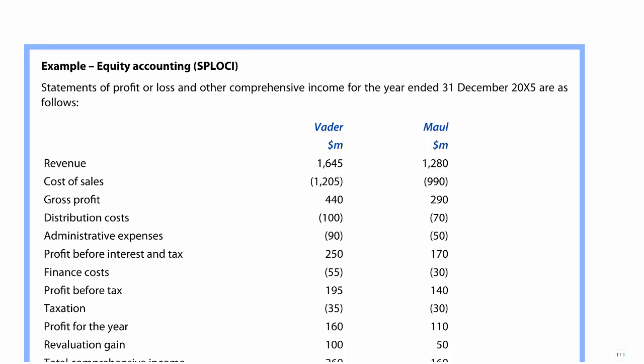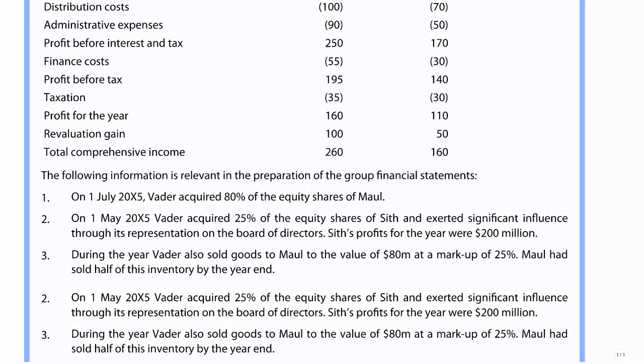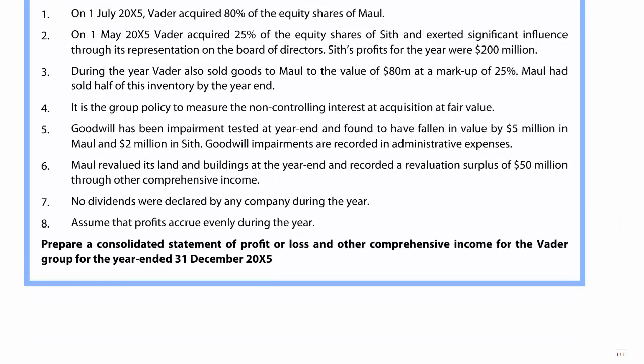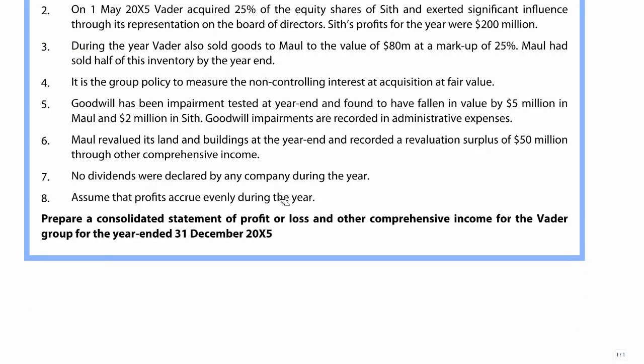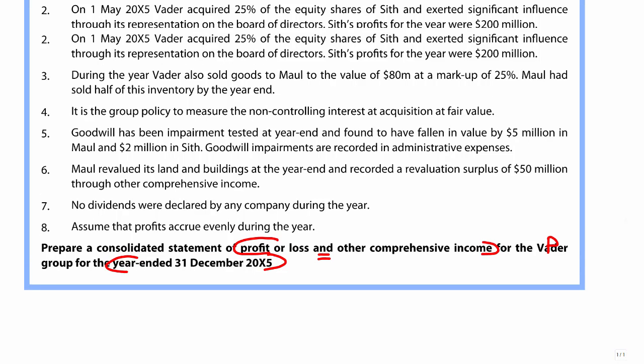Let's go through an example that covers equity accounting within the Statement of Profit or Loss and Other Comprehensive Income. The requirement asks us to prepare a Statement of Profit or Loss and Other Comprehensive Income for the VEDA group for the year ended 31st of December 20x5. When looking at Profit or Loss and Other Comprehensive Income, it's always important to note the year end date so that if there is any mid-year acquisition, we prorate things correctly.